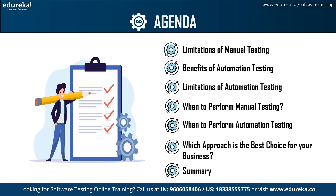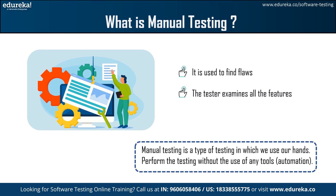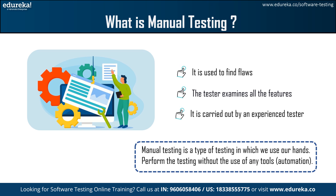Without any further delay, let's get started. What is manual testing? It is a type of testing in which we use our hands to perform testing without the use of any tools. During this testing, testers create test cases for the codes, run the software, and provide a final report. Manual testing takes time because humans perform it and there may be possibilities of human error. It is used to find flaws in the developed software application. The testers examine all of the application's crucial features and run test cases and generate test reports without the assistance of automation tools. It is carried out by an experienced tester.